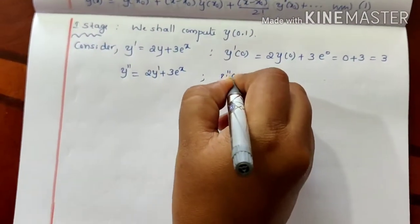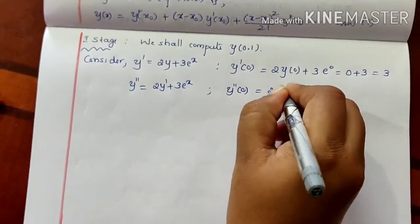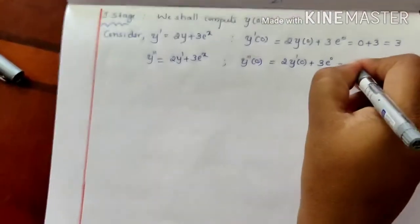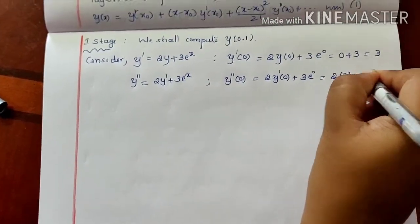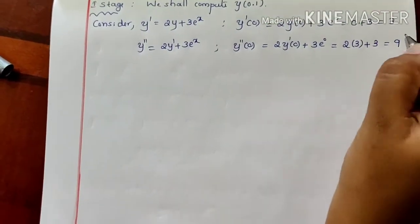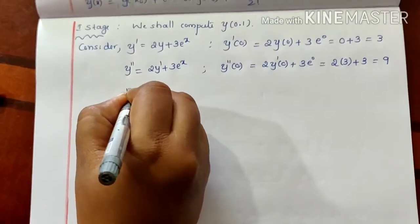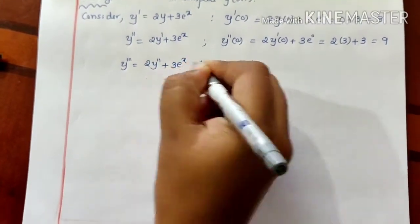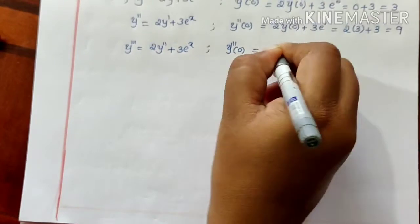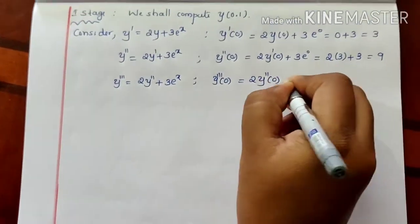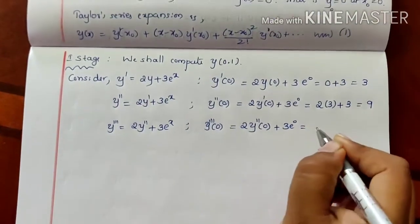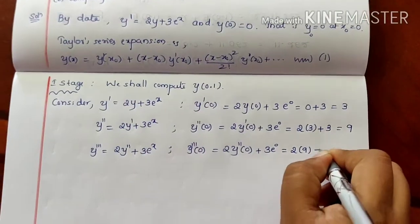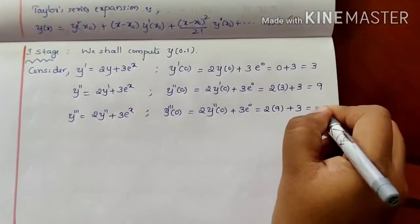So y double dash of 0 is 2 times y dash of 0 plus 3 into e raised to 0. That gives y double dash of 0 equals 2 times 3 plus 3, which is 9. Then y triple dash of 0 is 2 times y double dash of 0 plus 3 into e raised to 0, giving 2 times 9 plus 3, which equals 21.